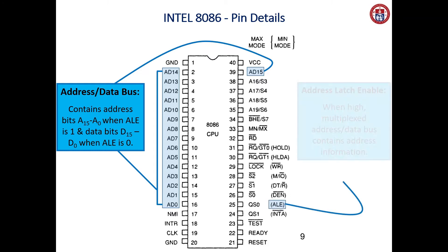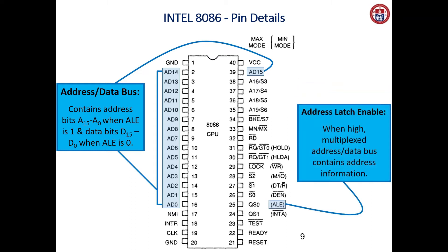The ALE pin is pin number 25 — Address Latch Enable. Whenever the address latch enable pin is high, the multiplexed address or data bus contains address information. Whenever ALE is low, it contains data information.